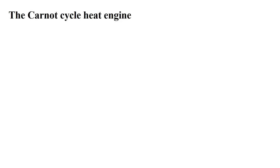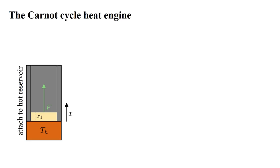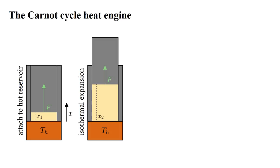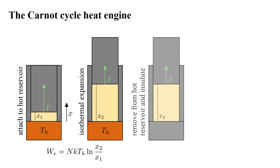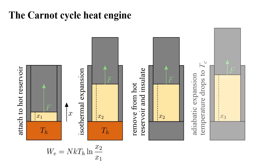Replacing the heating and cooling segments of the Stirling cycle with adiabatic processes, we obtain the Carnot cycle. We start with the gas attached to a hot reservoir with the piston in position X-1. The gas undergoes isothermal expansion to piston position X-2, identical to the Stirling cycle, producing the same work on the environment, with an equal amount of energy flowing as heat from the hot reservoir. Then, instead of attaching the cold reservoir, we insulate the gas and expand it adiabatically to position X-3, causing the temperature to drop from T-hot to T-cold.